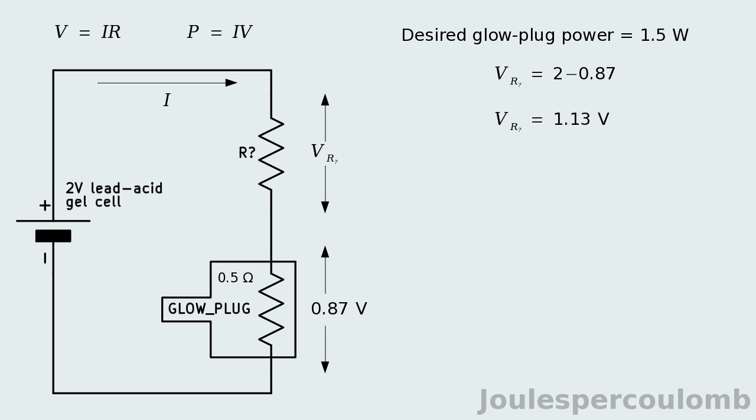Now the voltage across R can be determined. It must be the result of subtracting the 0.87 volts that falls across the glow plug from the two volts put across the entire circuit by the cell.